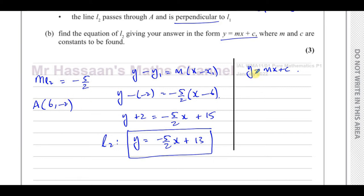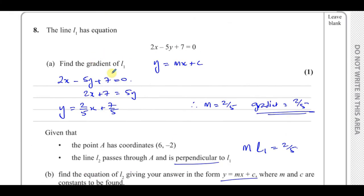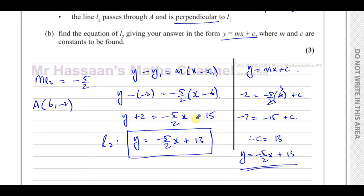For the second method, using y equals mx plus c: replace y with -2, m with -5 over 2, and x with 6. So -2 equals (-5 over 2)(6) plus c, which gives -2 equals -15 plus c. Therefore c equals -2 plus 15, which is 13. So y equals negative 5 over 2 x plus 13. Both methods give the same answer and are perfectly fine.